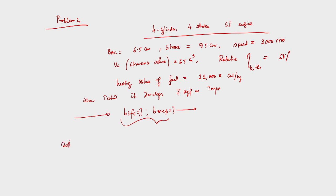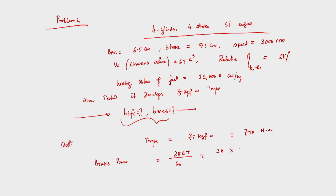Solution: Torque is given as 7 kgf·m = 75 kgf·m, which equals 750 N·m. Brake power equals 2πNT/60, so that is 2π × 3000 × 750 / (60 × 10³), giving brake power of 235.61 kW.